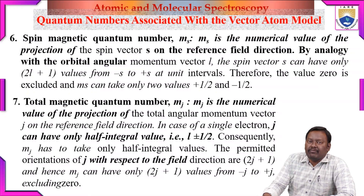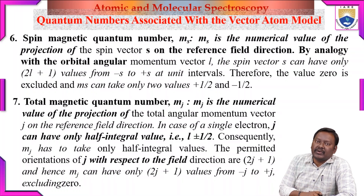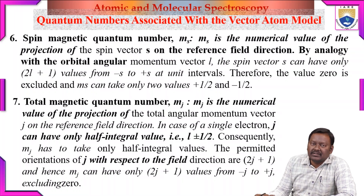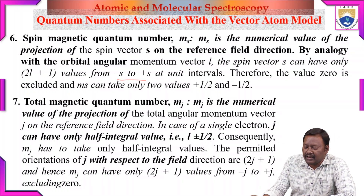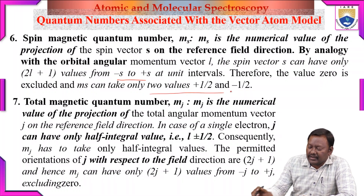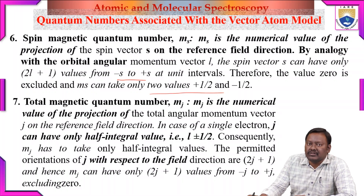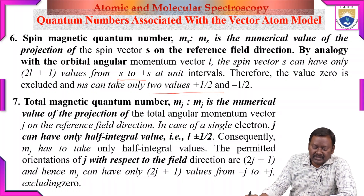The sixth quantum number is the spin magnetic quantum number M_s, which is the numerical value of the projection of the spin vector S on the reference field direction. By analogy with the orbital angular momentum, the spin vector S can also take 2S+1 values. Since S is always 1/2, M_s can take only 2 values: plus 1/2 and minus 1/2, with 0 excluded.